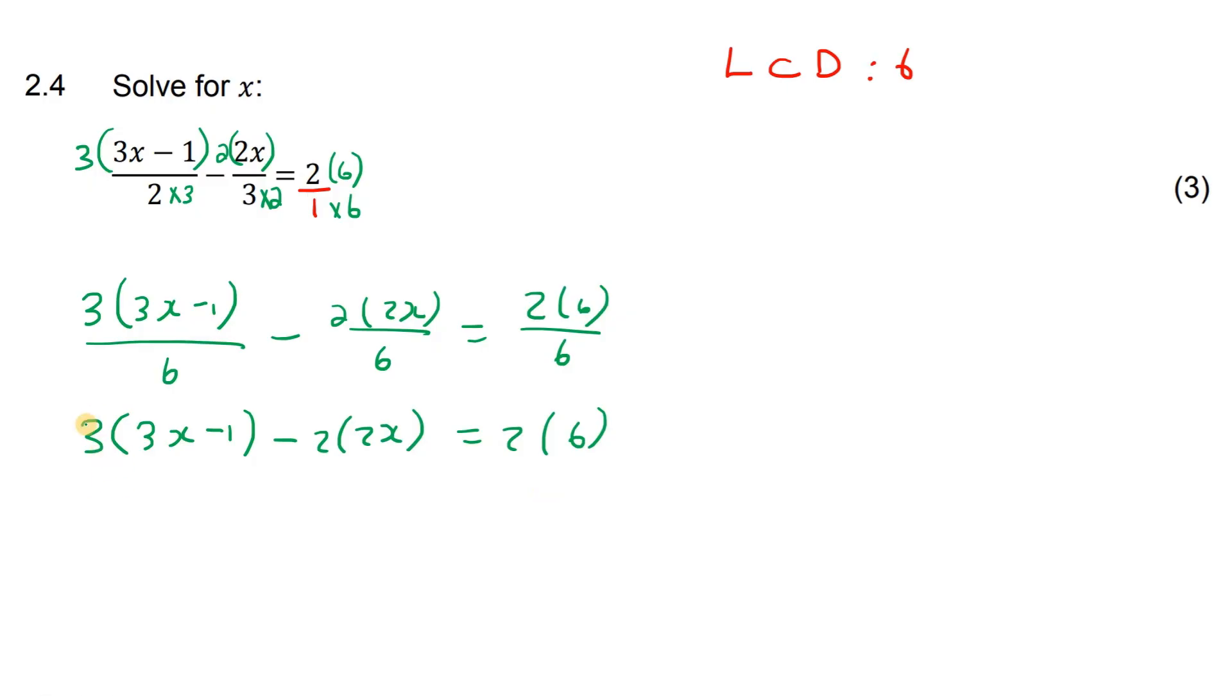Now we just multiply the 3 into the bracket. So that becomes 9x take away 3, take away 4x equals 12.